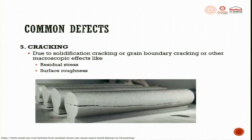Next is cracking. Due to solidification, cracking at grain boundaries or other macroscopic effects like residual stresses and surface roughness leads to cracking. These are all tensile stresses that lead to cracks. Once there is a crack, it propagates. These things are all happening because of solidification defects - this is called solidification cracking.